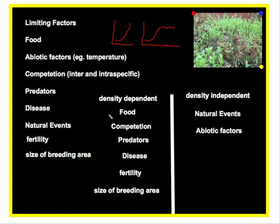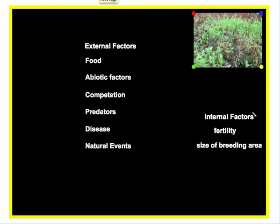Some of these factors are directly related to the number of organisms living within a given space — the population density. These factors stem from high population densities. But there are some factors that, regardless of whether you have 100 or 100,000 organisms, would have a similar impact. These include natural events like hurricanes, earthquakes, and volcanoes, as well as abiotic factors that regulate climate and weather.